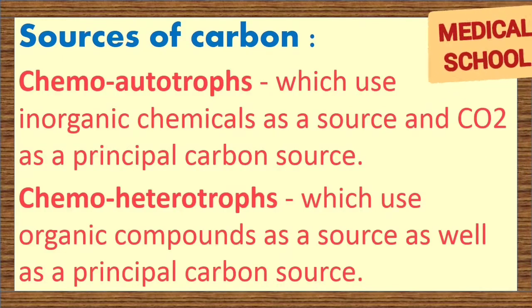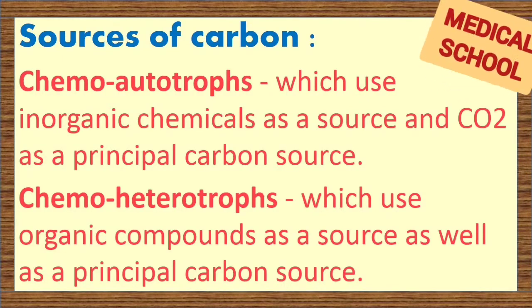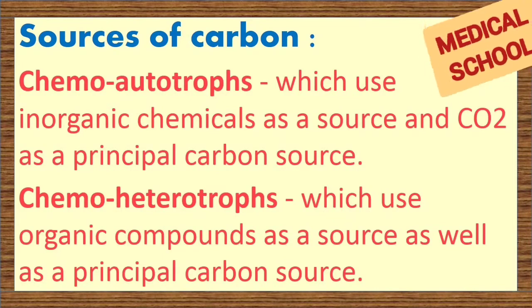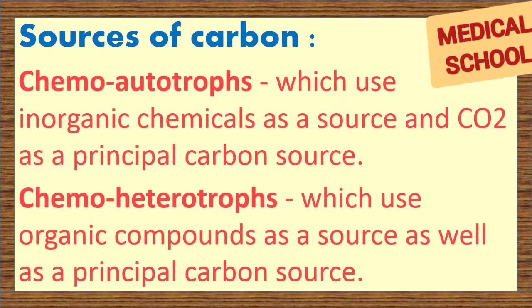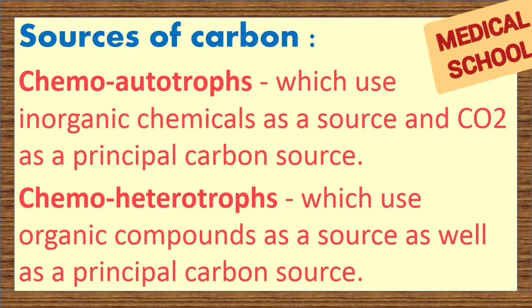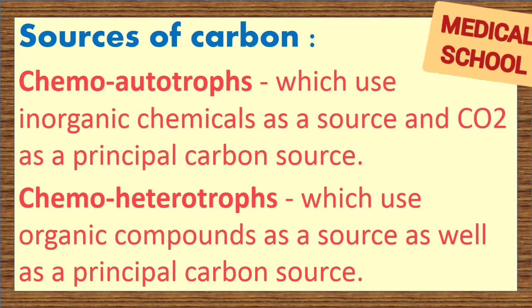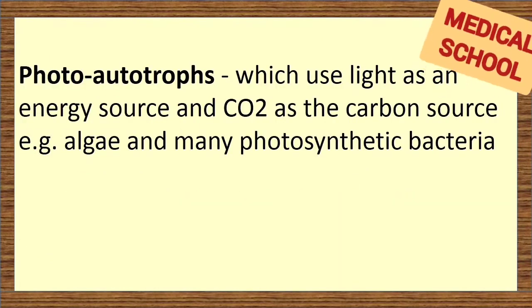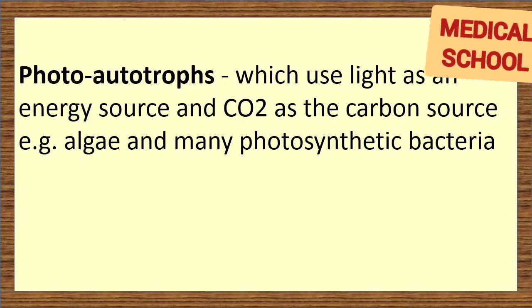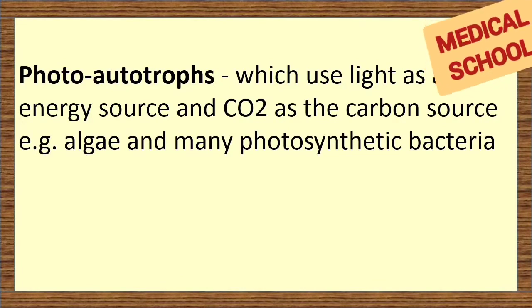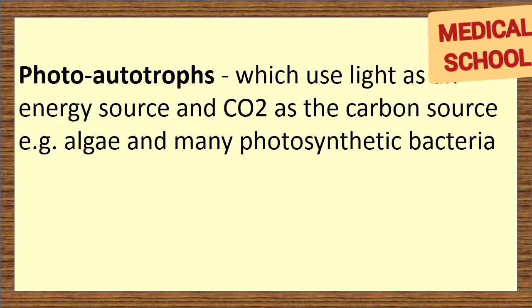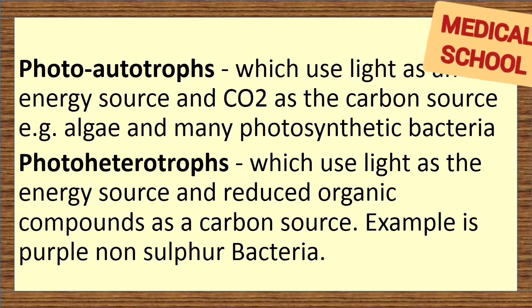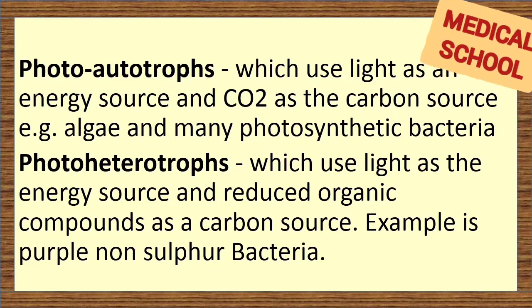On the basis of sources of carbon, bacteria can be classified as: Chemoautotrophs, which use inorganic chemicals as a source and carbon dioxide as a principal carbon source. Chemoheterotrophs use organic compounds as both a source and a principal carbon source. Photoautotrophs use light as an energy source and CO2 as the carbon source — for example, algae and many photosynthetic bacteria. Photoheterotrophs use light as the energy source and reduced organic compounds as a carbon source — for example, purple non-sulphur bacteria.